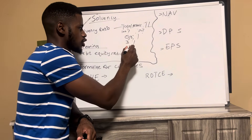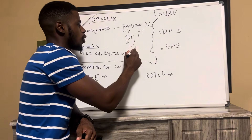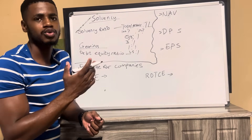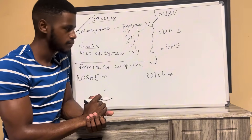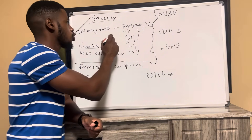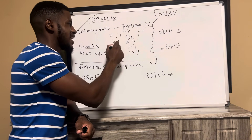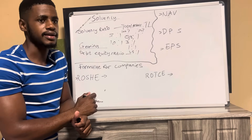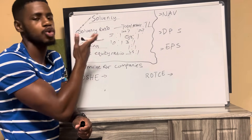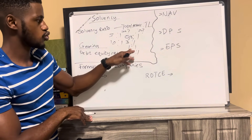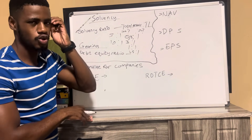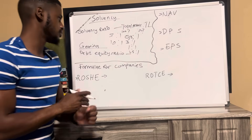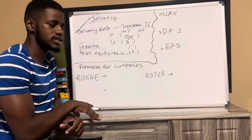Ideally if the ratio is close to 1:1 or 1.5:1, that's a good position — our total assets will be able to cover all of our total liabilities. We don't want it to be 5:1 or 10:1 because of the reasons stated for the current ratio. Ideally 1:1 or 1.5:1 is good solvency-wise. Then we'll be looking at our debt equity ratio.